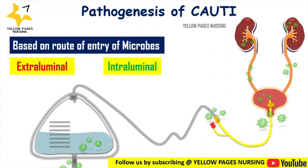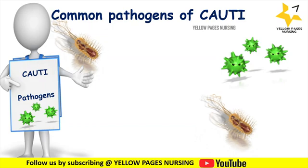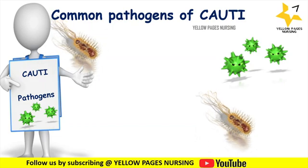For intraluminal pathogenesis, bacteria tend to be introduced when opening the closed urinary drainage systems. Microbes ascend from the urine collection bag into the bladder via reflux. Biofilm formation occurs and causes damage to the bladder mucosal surface, which facilitates further biofilm on this surface.